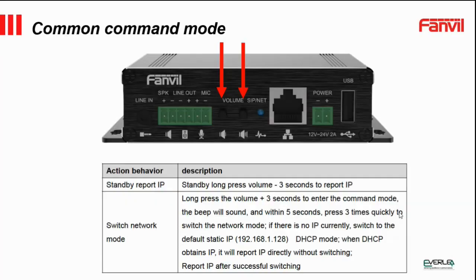There's a command mode where you can get the unit to report its IP address. If you're at a site and want to know the IP, just press and hold the volume down key for about three seconds and tap it again, and it will speak the IP address. You can also switch between DHCP and fixed IP. By default it comes on fixed IP at 192.168.1.128, and you can switch to DHCP mode using the volume up and down keys.